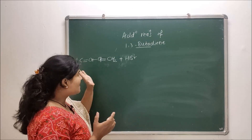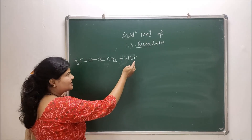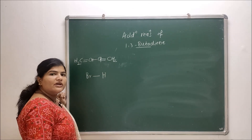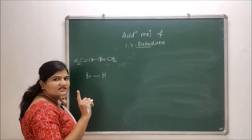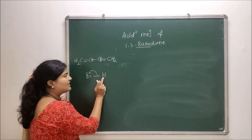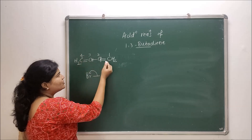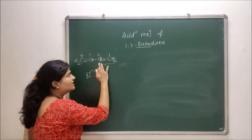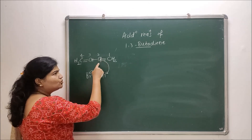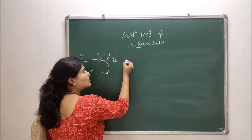Let's discuss the mechanism. HBr is our reagent. It first ionizes by heterolytic fission — both electrons are retained by bromine, giving Br⁻ and H⁺. Now, from one of the double bonds — say between carbon one and two — the pi bond donates its electrons to the proton. The proton can technically attach to carbon one or carbon two.